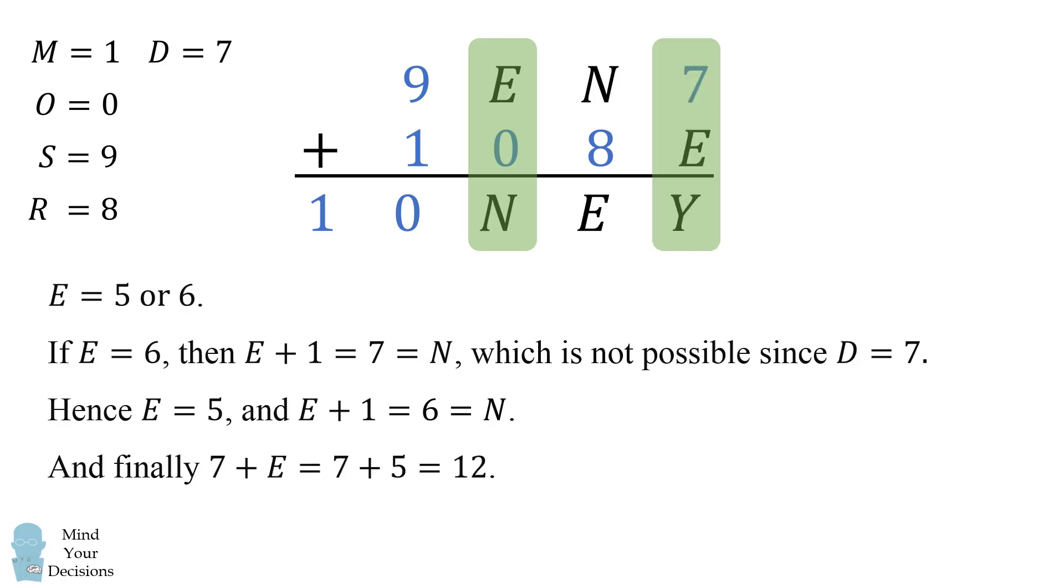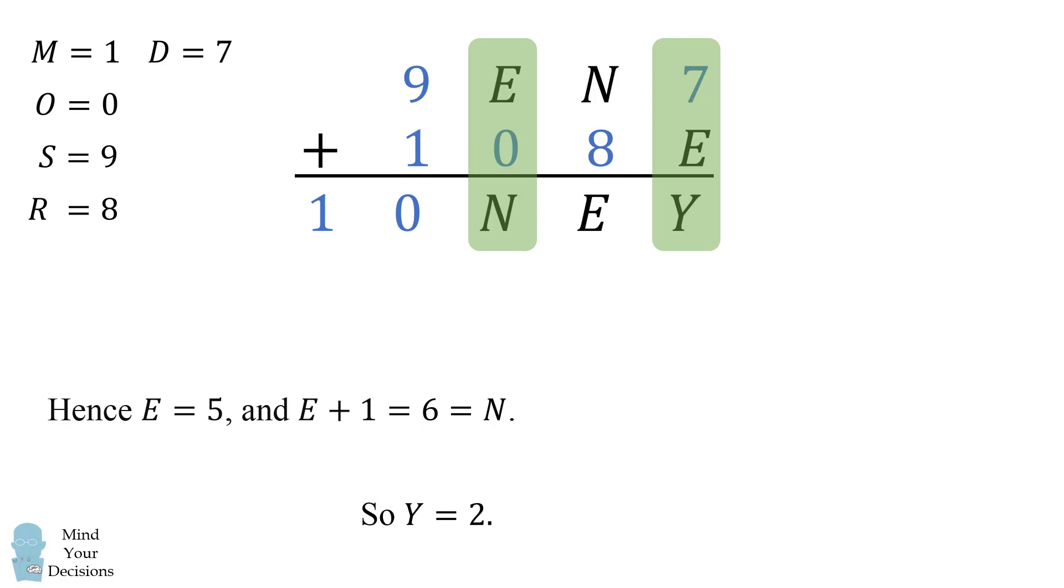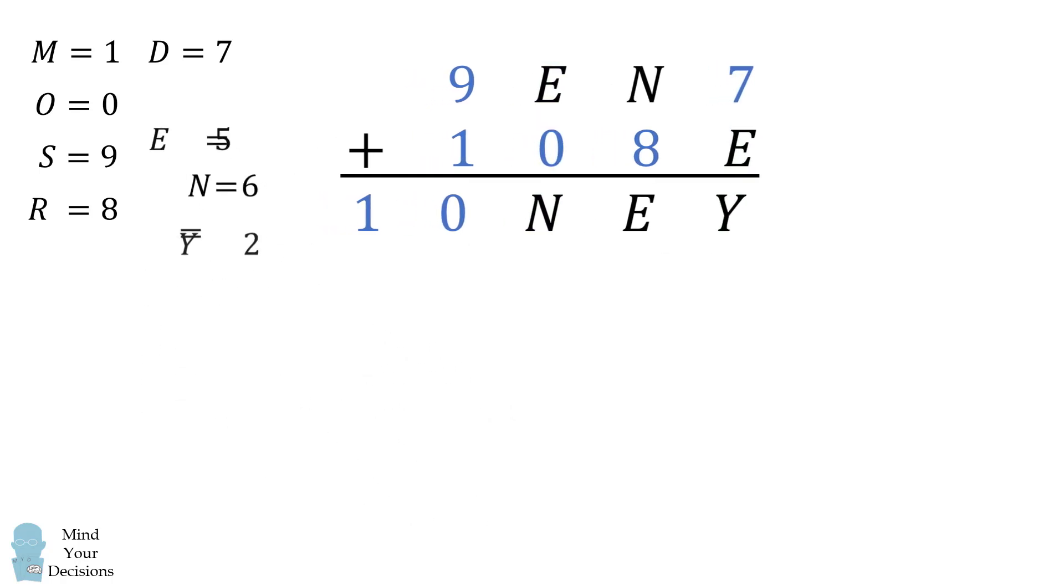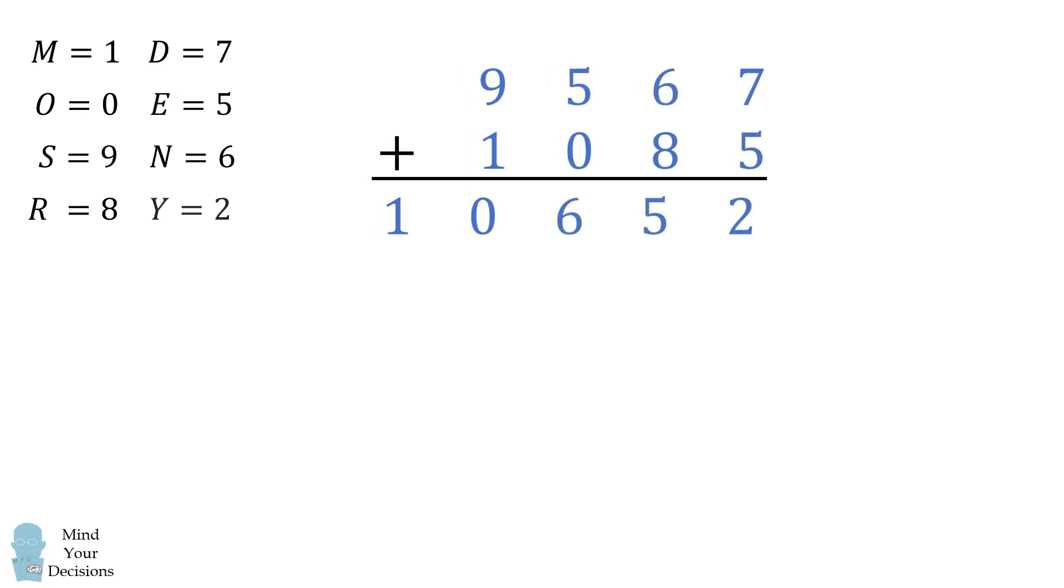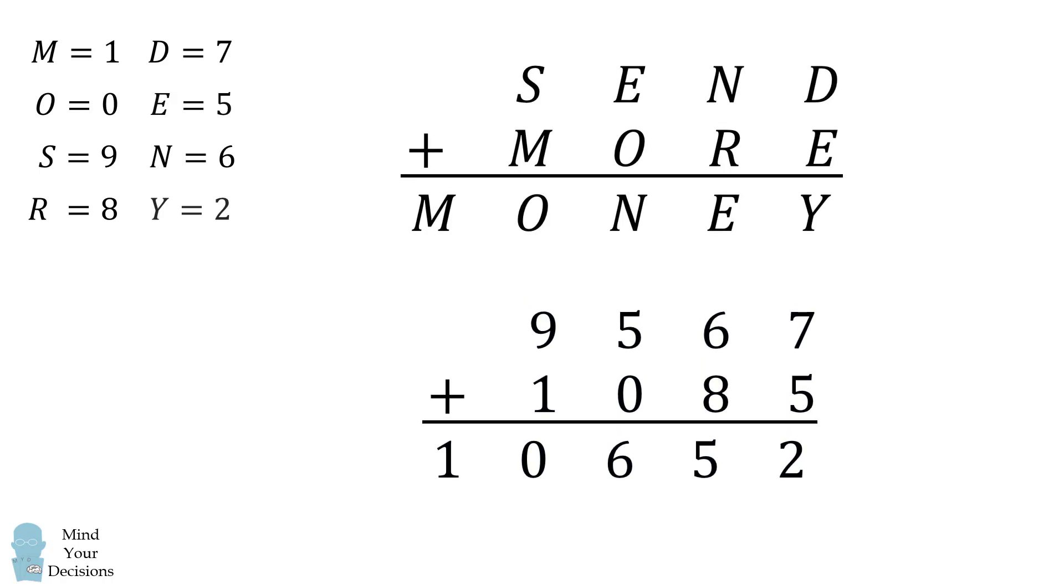Finally, we have 7 plus E, which will be equal to 7 plus 5, which equals 12. So this means Y is equal to 2. And we figured it out. We have E is equal to 5, N is equal to 6, and Y is equal to 2. And we've solved that this puzzle, send plus more is equal to money, has a solution 9,567 plus 1,085 is equal to 10,652.